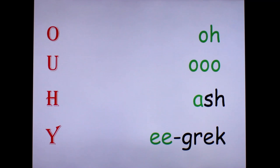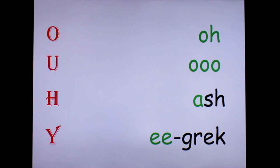Let us understand what a semi-vowel is. In phonetics or phonology, a semi-vowel or glide is a sound that is phonetically similar to a vowel sound but functions as a syllable boundary. Examples of semi-vowels in English are the consonants Y and W, and in French they are H and Y. H is a mute consonant in French — it changes the word with 'liaison' and otherwise it is not pronounced.